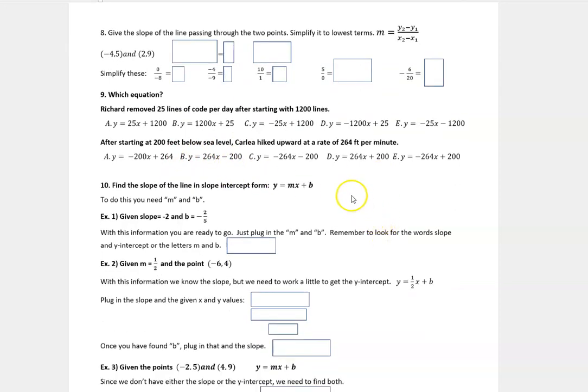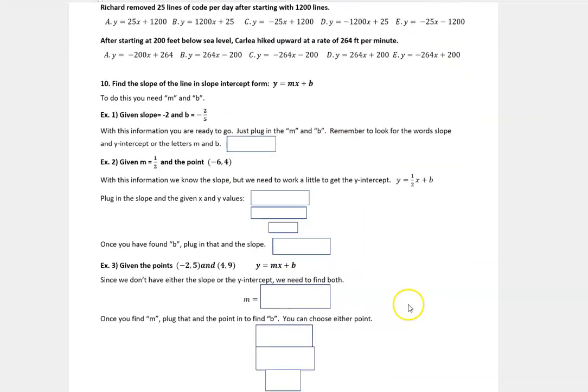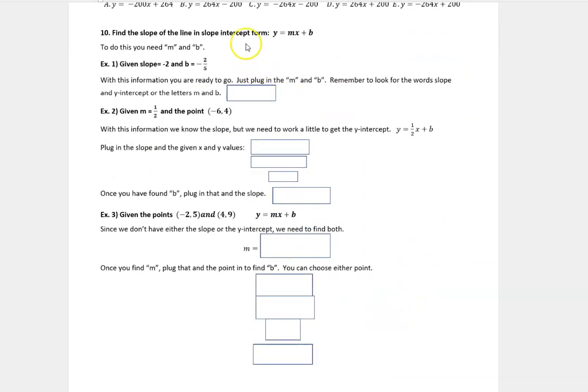And then number 10. All these examples are finding the equation of a line in slope intercept form. Now slope intercept form is y equals mx plus b. And in order to do this, you need two things that is the m and the b. So in some examples, they will say the slope is negative two and b is negative two fifths. They just gave you the slope, which is m and the b, which is the y intercept. Now sometimes they might say m instead of slope, or they might say y intercept instead of b. But if they give you those two pieces of information, you are good to go.